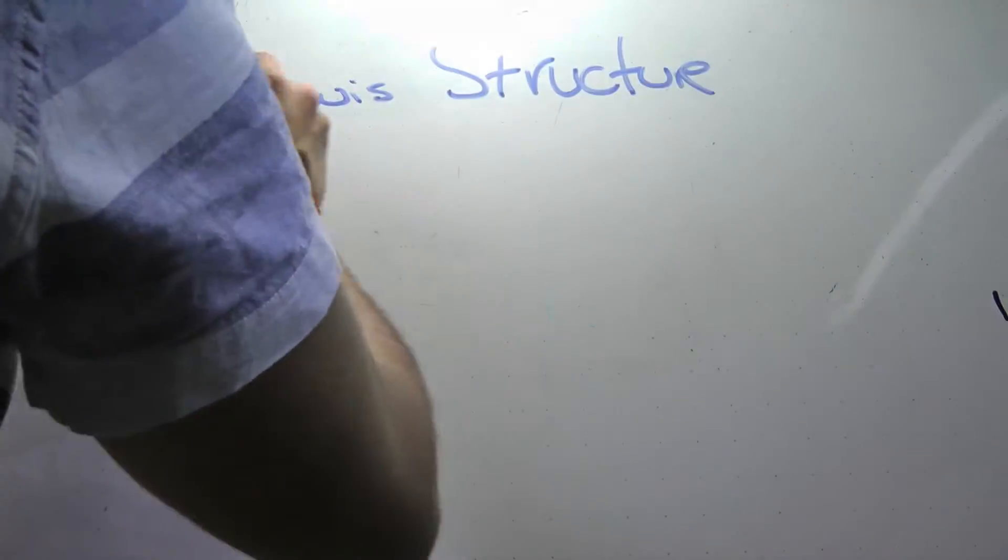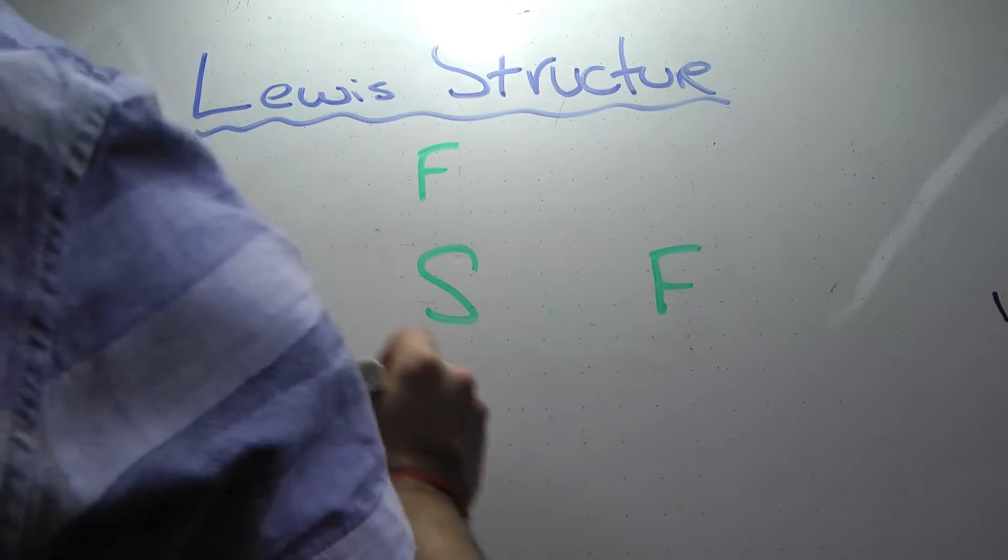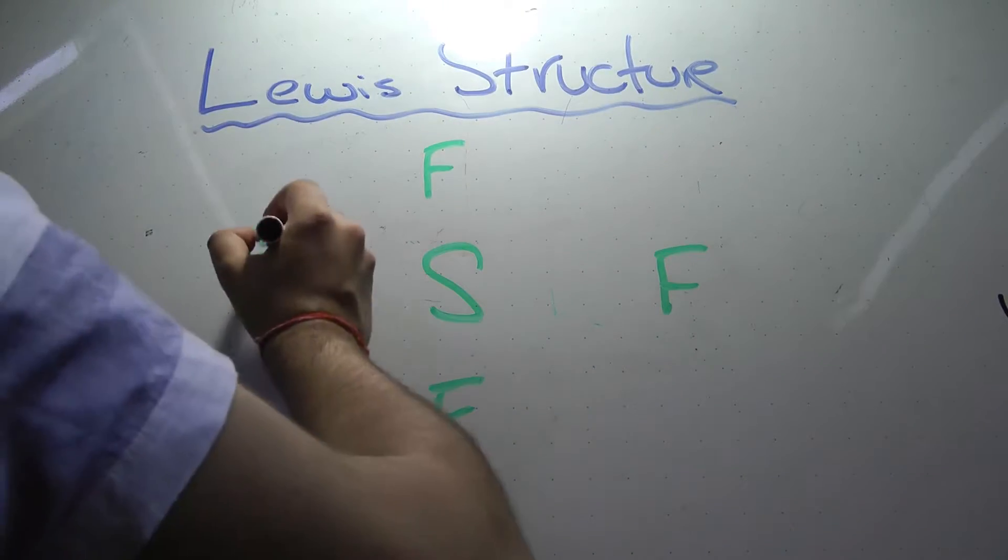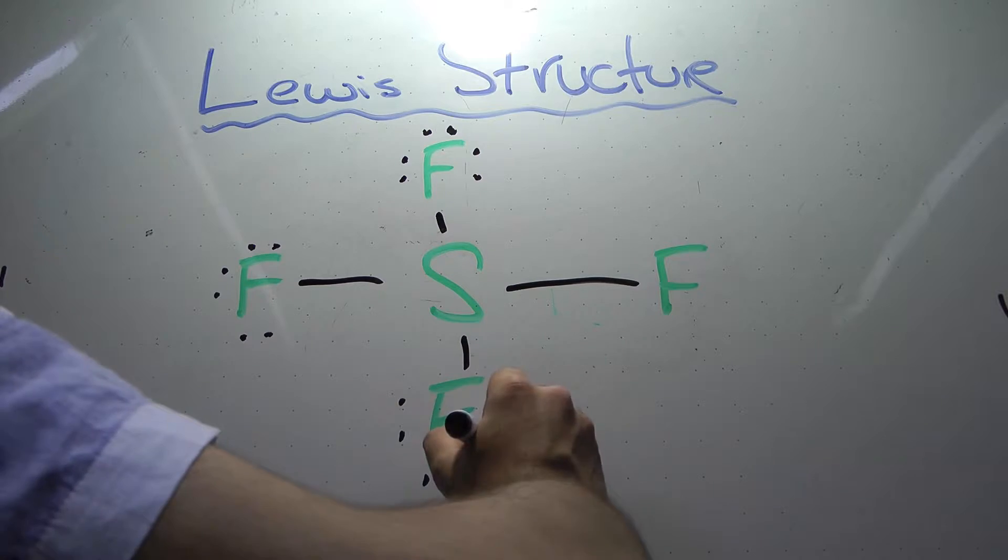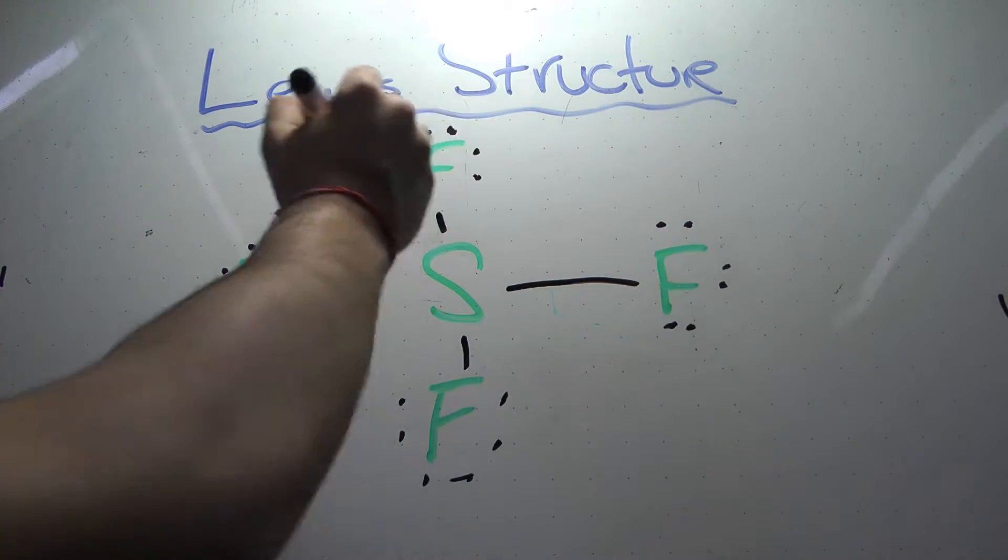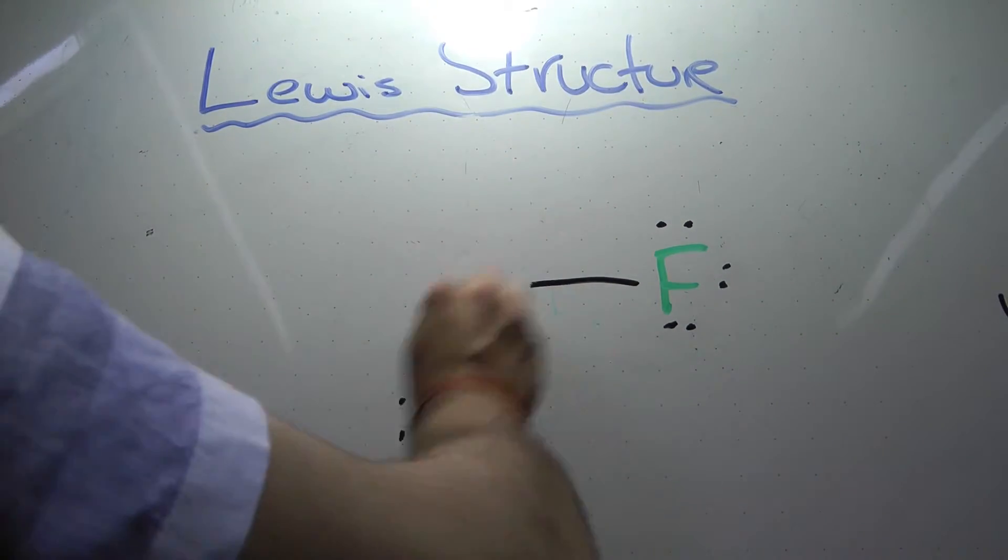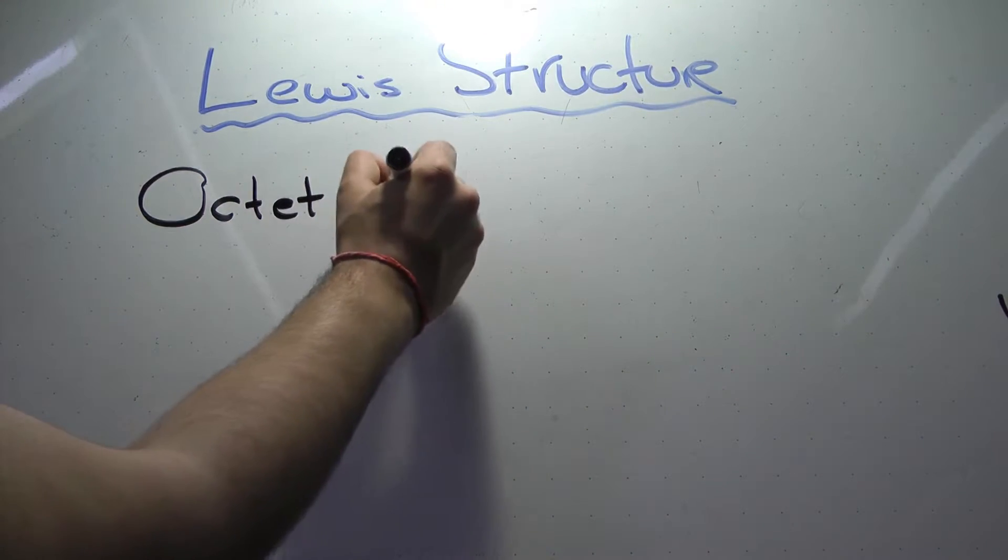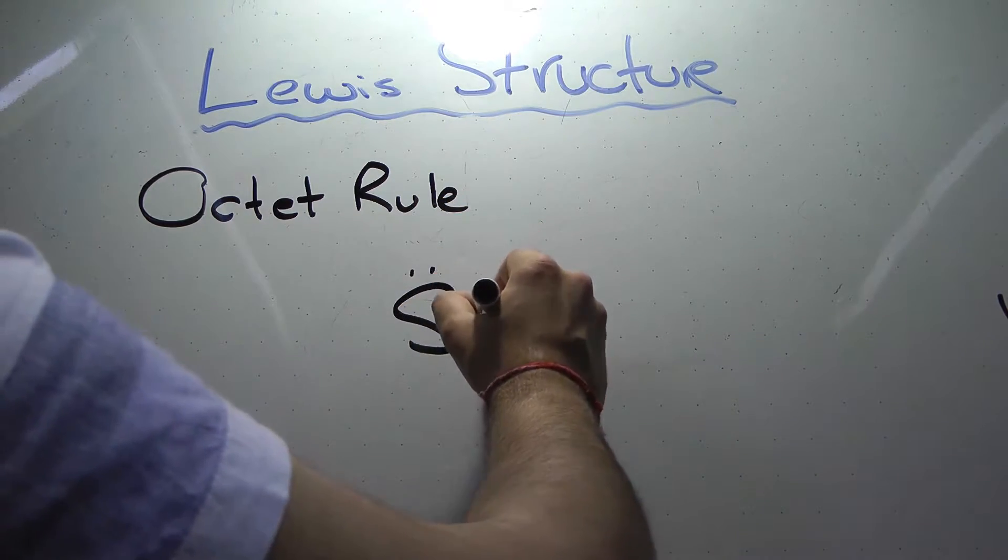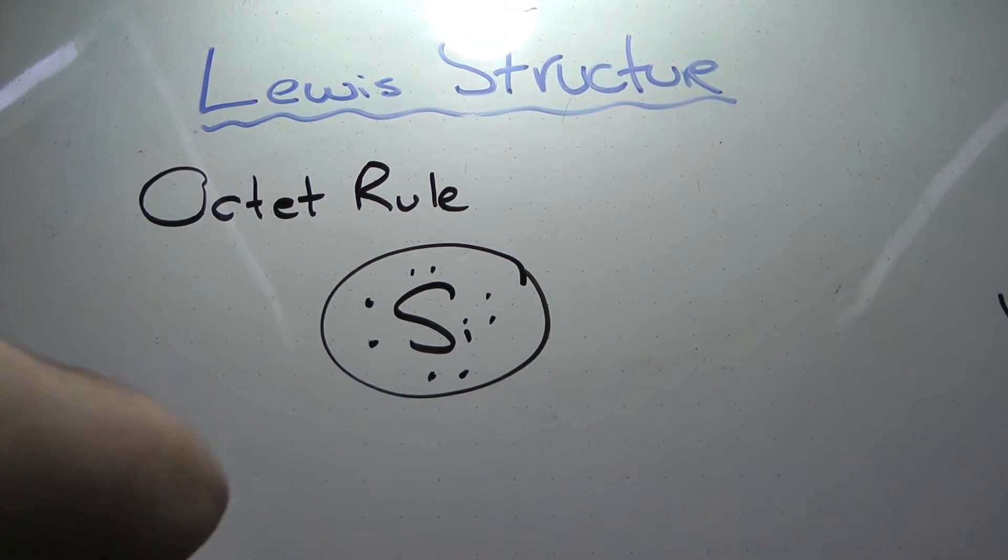The Lewis structures are diagrams that show the bonding between atoms of a molecule and the lone pairs of electrons that may exist in the molecule. A Lewis structure can be drawn for any covalently bonded molecule, as well as coordinate compounds. The atoms in a Lewis structure tend to share electrons so that each atom has 8 electrons. This is known as the octet rule.